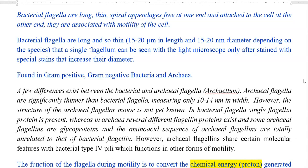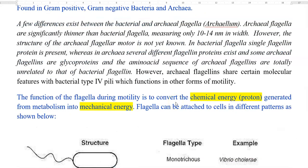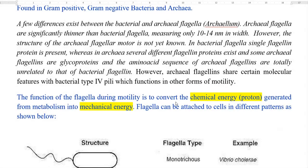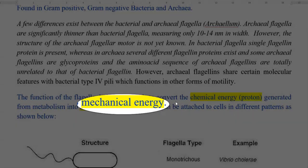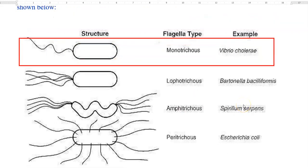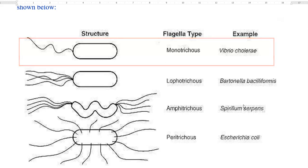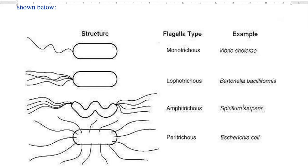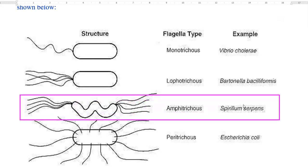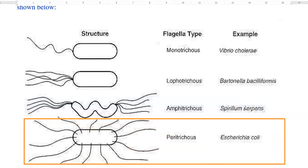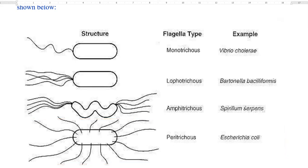Next, we look at the function of flagella. It is mainly for the motility or movement of bacteria. The mechanism involves chemical energy obtained from protons during the course of metabolism being converted into mechanical energy by the flagella. Flagella can be attached to cells resulting in different patterns. They can be a single type referred to as monotrichous flagella, which occurs in Vibrio cholerae. A tuft of flagella at one pole is referred to as lophotrichous, as seen in Bartonella baciliformis. Amphitrichous is a tuft at both ends, occurring in certain spiral cells. And peritrichous, a classical example being Escherichia coli, in which flagella are distributed throughout the cell.